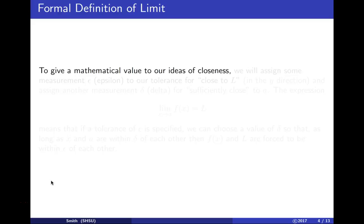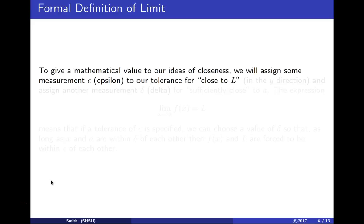To give a mathematical value to this closeness, we're going to assign a measurement epsilon — a Greek letter epsilon — for our tolerance. This is the error or tolerance on the y-axis, and epsilon is going to represent what we mean by being close to L along the y-axis.